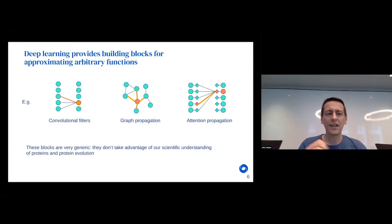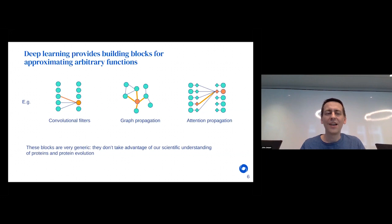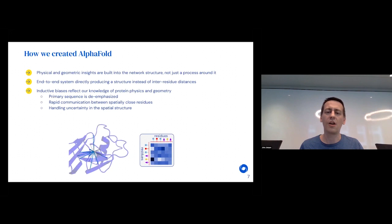Machine learning has given us incredible building blocks — such as attention — that are incredibly powerful, working in speech, language, and understanding videos. But these blocks are so generic that they know nothing about proteins, and we only have about 200,000 protein structures. So we want a place to insert our scientific understanding and creativity. As we built AlphaFold 2 — a huge departure from AlphaFold 1 — we tried to put physical and geometric insights into the machine learning itself.